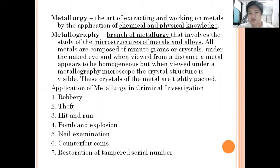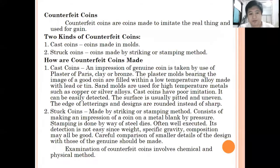In the restoration of tampered serial numbers, we refer to the process as macro-etching. For counterfeited coins, there are two ways to create them: cast coins and struck coins.